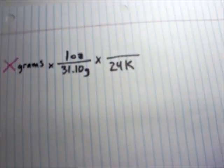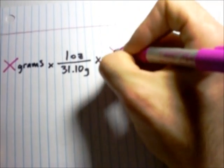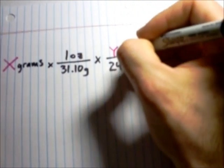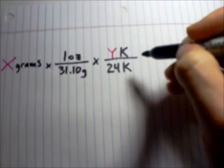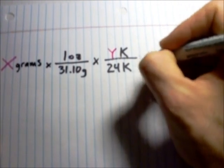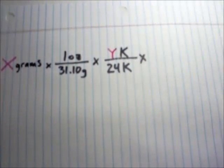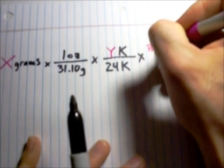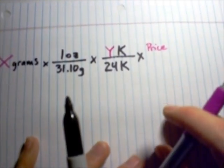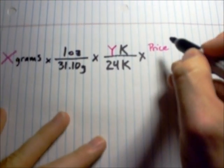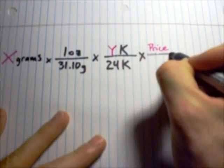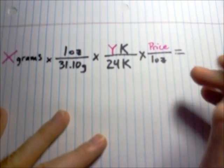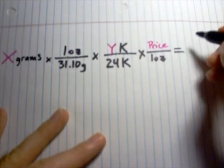And we'll multiply that times. We've got to figure out our percent gold, so we'll just say our, we'll call that variable y, our carats of our gold times the price per ounce. We'll just write out price that time. Per one ounce of gold. And so, that will give us the value.